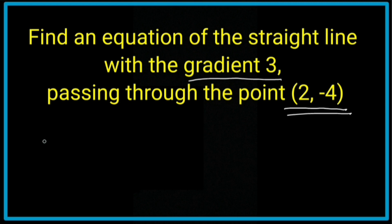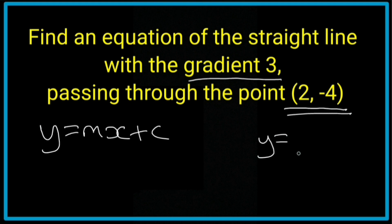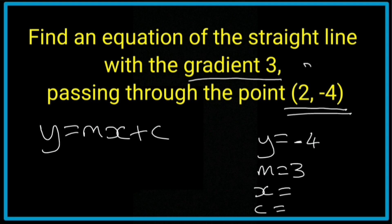Now I'm going to write the equation y = mx + c and down the side I'm going to list what I have: y =, m =, x =, and c =. I know the gradient is 3 so m = 3. I have y = -4 from the coordinates — don't forget the first coordinate is x and the second is y. I have x = 2, and c I don't know.